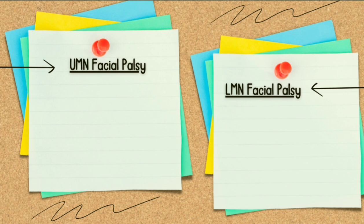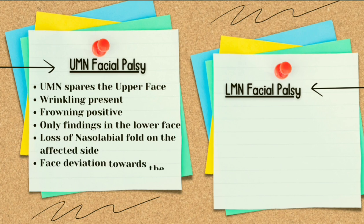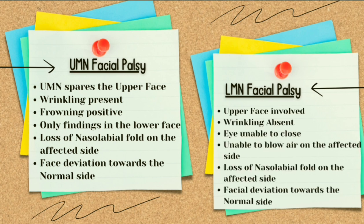Coming towards how to differentiate between upper motor neuron and lower motor neuron facial palsy on clinical examination: in upper motor neuron type, the upper face is spared — wrinkling is present. Findings are only in the lower face: loss of nasolabial fold on the affected side and facial deviation towards the normal side. In lower motor neuron type, the upper face is involved, wrinkling is absent, the patient cannot close one eye, cannot blow air on the affected side, and there is loss of nasolabial fold plus facial deviation towards the normal side. Remember: facial deviation is always towards the opposite, normal side.